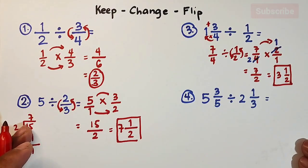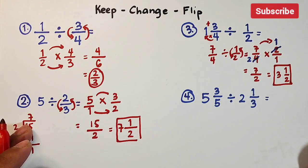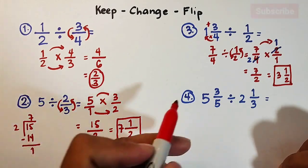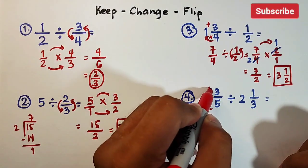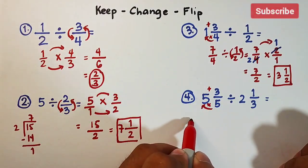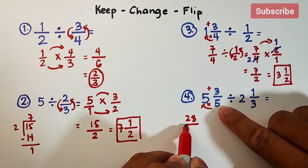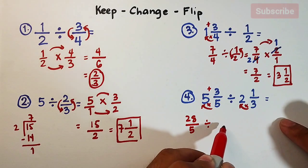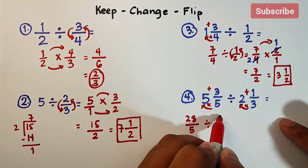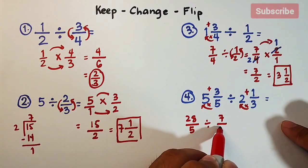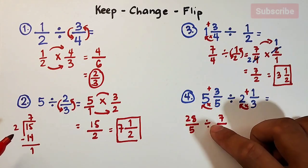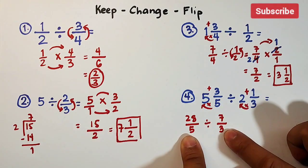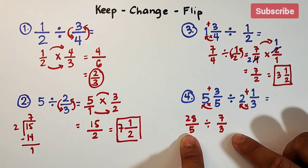For number 4, both given values are mixed numbers. Before using keep, change, and flip, convert both to improper fractions. For the first: 5 times 5 is 25, plus 3 equals 28 — copy your denominator, giving 28 over 5. For the second: 3 times 2 is 6, plus 1 equals 7 — copy your denominator, giving 7 over 3. Now we are ready to use keep, change, and flip.